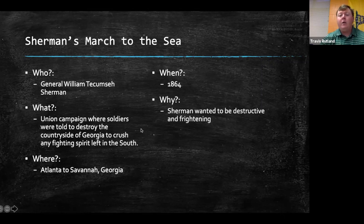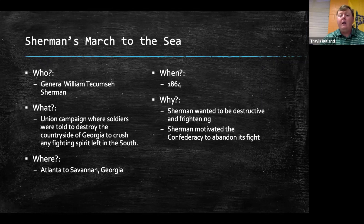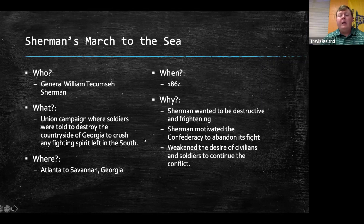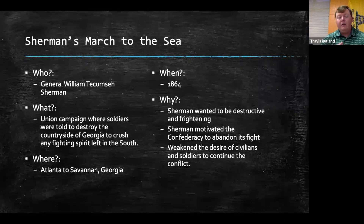Why did Sherman do this? Sherman wanted to be destructive and frightening. He wanted to motivate the Confederacy to abandon its fight — making them give up by seeing the destruction he could cause. He also wanted to weaken the desire of civilians and soldiers to continue the conflict. He wanted to break their spirits and stop them from fighting.